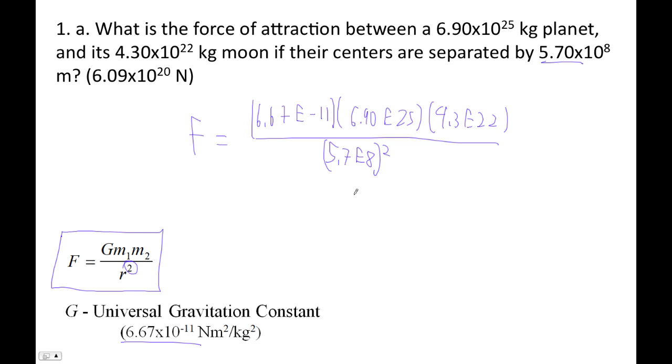All right, so 6.67, second comma, so E minus 11, times 6.9E, and that's 25, right? And then times 4.3E22, divided by 5.7E8, and then square that. Don't forget to square the denominator.